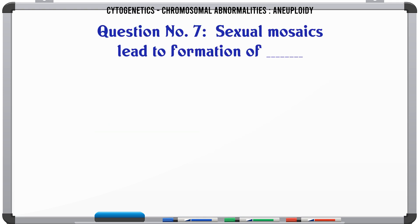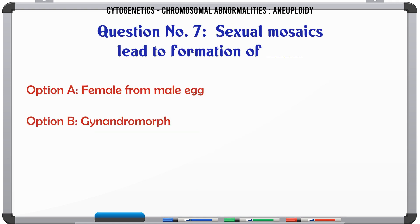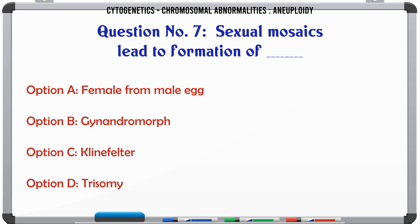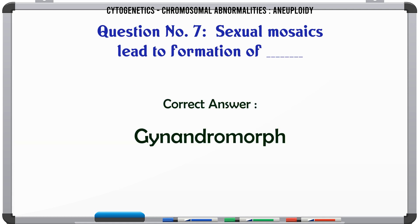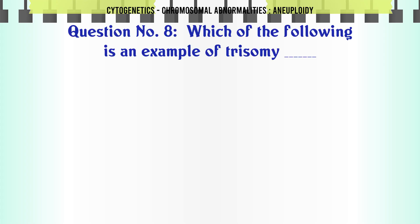Sexual mosaics lead to the formation of: a. Female from male egg, b. Gynandromorph, c. Klinefelter, d. Trisomy. The correct answer is Gynandromorph.